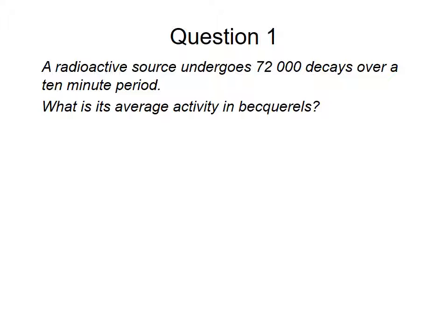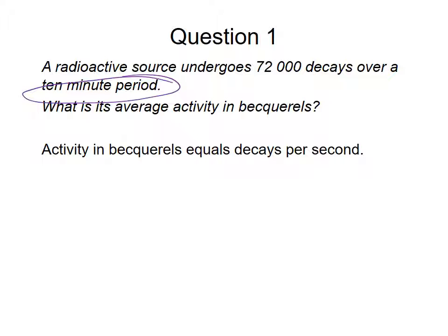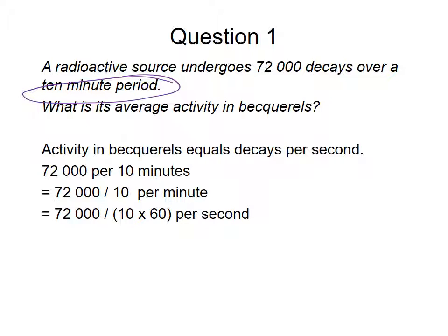So here's a question involving Becquerel. A radioactive source undergoes 72,000 decays over a 10-minute period. What is the average activity in Becquerels? Pause the video now and come back when you think you have an answer. The key to the question, of course, is a little trick here. It's in a 10-minute period. So the average activity is equal to, a Becquerel is equal to decay per second. So you need to convert those minutes into seconds. 72,000 per 10 minutes, which is 72,000 divided by 10 times 60, because we're converting into seconds.